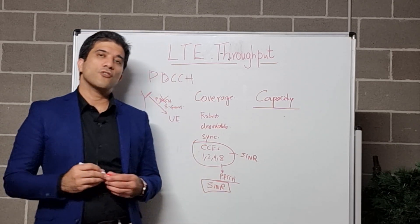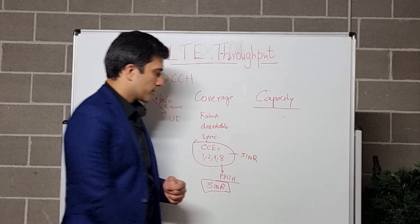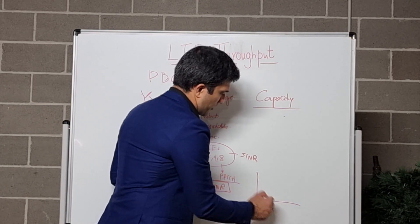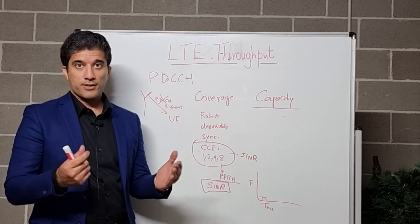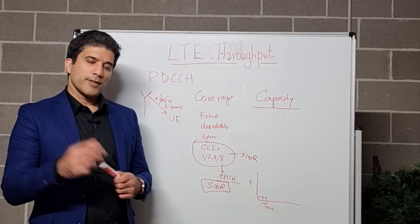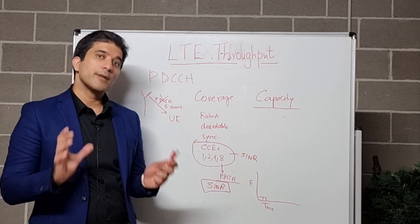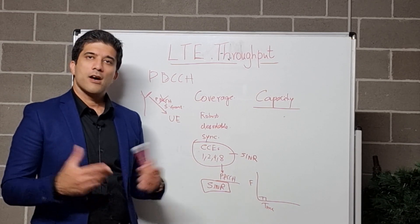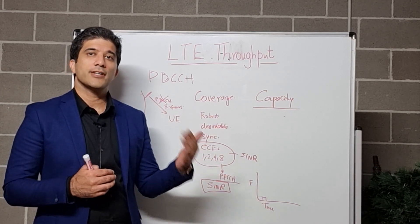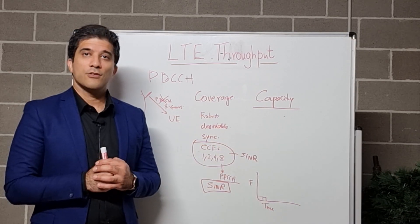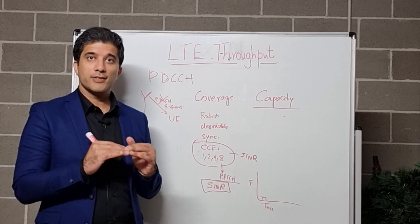Now, what about capacity — how can PDCCH capacity impact your throughput? By capacity of PDCCH we mean that we have a limited number of resources. If you look at the resource block structure — this is the time domain, this is the frequency domain — usually the first few symbols of your slot are reserved for PDCCH. If all those PDCCH resources are consumed, the eNodeB cannot inform your UE that there is a scheduling grant — there is data in the eNodeB that needs to be sent out — so throughput will degrade and traffic on that eNodeB will dip.